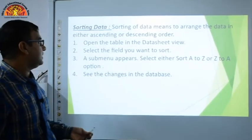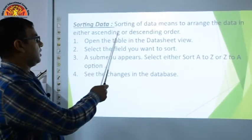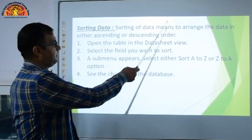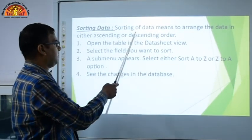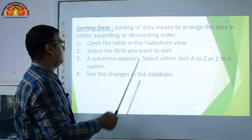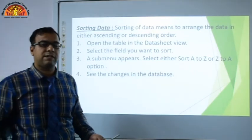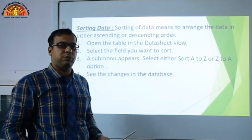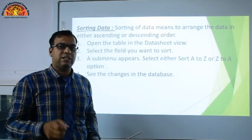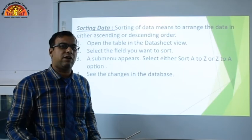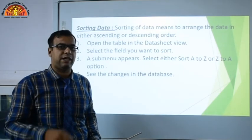Next is sorting data. Sorting of data means arranging the data in either ascending or descending order. For example, you can sort the 'name' field in ascending or descending order.